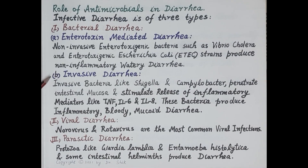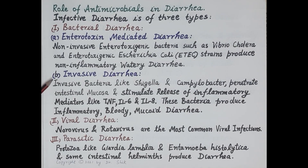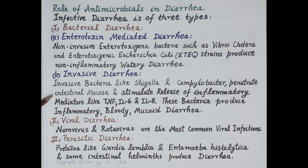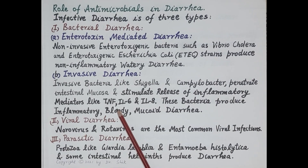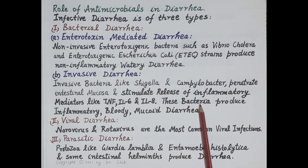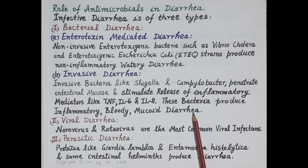The second type of bacterial diarrhea is invasive diarrhea, produced by invasive bacteria. Invasive bacteria like Shigella and Campylobacter penetrate the intestinal mucosa and after penetrating the intestinal cells, they stimulate release of inflammatory mediators like tumor necrosis factor, interleukin-6, and interleukin-8. These bacteria produce inflammatory bloody mucoid diarrhea.